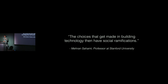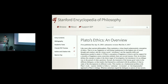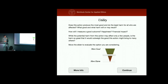One professor said the choices that get made in building technology then have social ramifications. I recommend two resources: the Stanford Encyclopedia of Philosophy, and the Markkula Center for Applied Ethics, which has a really cool interactive tool with these lessons.